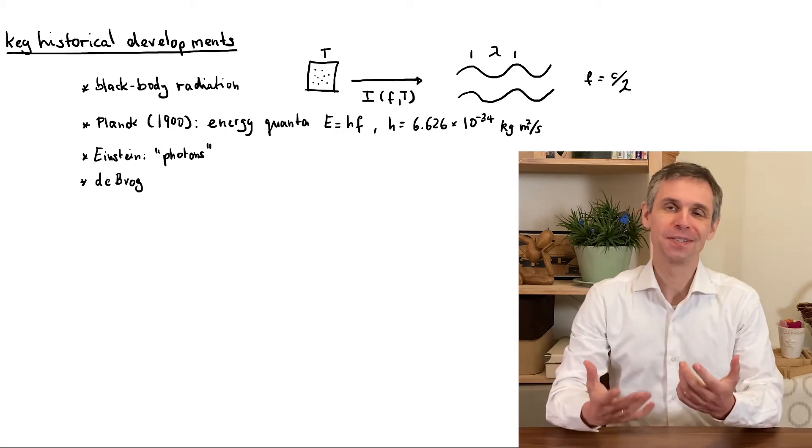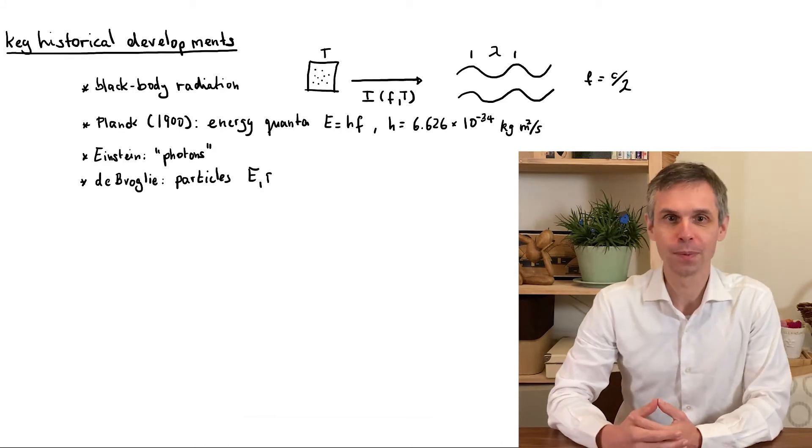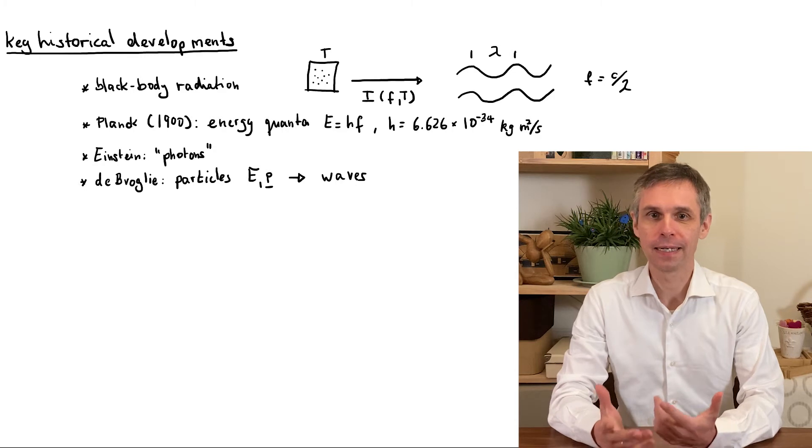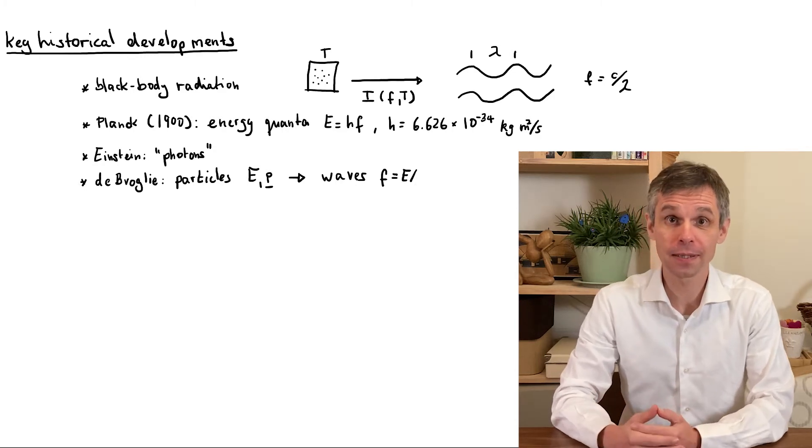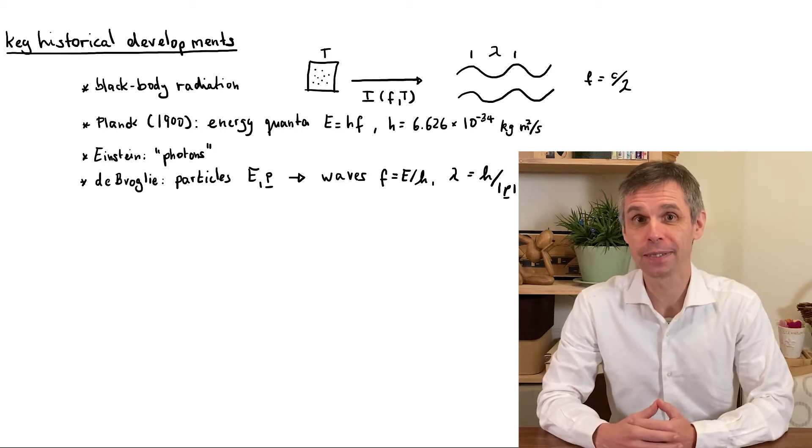de Broglie further developed this idea by linking particles of energy E and three-dimensional momentum p to a wave of frequency f given by the energy divided by Planck's constant, and wavelength lambda given by Planck's constant divided by the magnitude of the momentum.